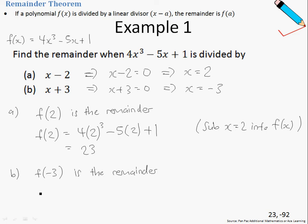How do we find f(-3)? We simply substitute x equals negative 3 into the given polynomial. If we do that and simplify with our calculator, we get negative 92. Therefore, the remainder when f(x) is divided by (x + 3) is negative 92.